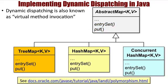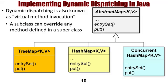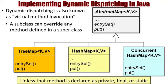Dynamic dispatch is also known as virtual method invocation, which is the default dispatching mechanism for methods in Java. Therefore, a subclass can override any method defined in a superclass, unless that method is declared as private, final, or static.